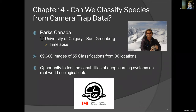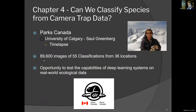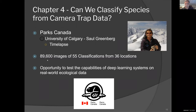So we can count — great. The question is: can we classify species from camera trap data? This involved a partnership with Parks Canada and the University of Calgary, and an individual named Saul Greenberg, who is the lead programmer on an annotation tool known as Timelapse for camera trap images. We had 89,600 images of 55 classifications from 36 locations. I want to prime the machine learning people here: what might happen with 90,000 images from 36 locations? What inherent biases might be created? This was an opportunity to test the capabilities of deep learning systems on real-world ecological data.